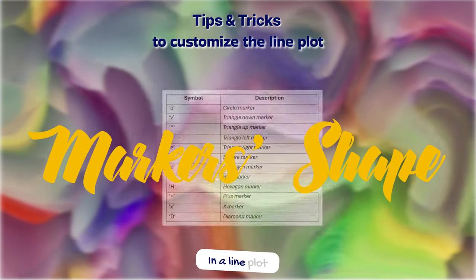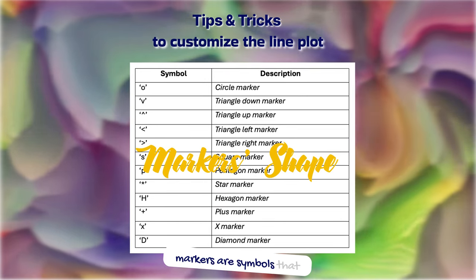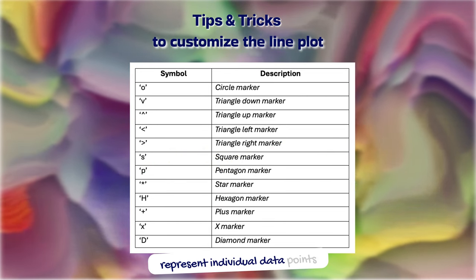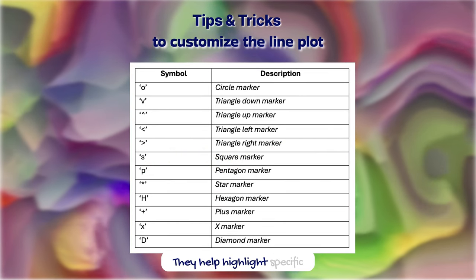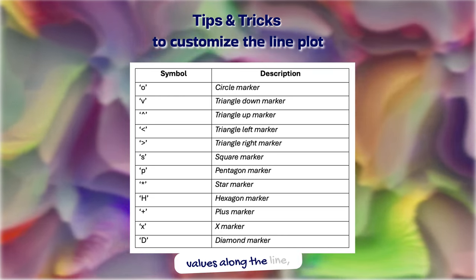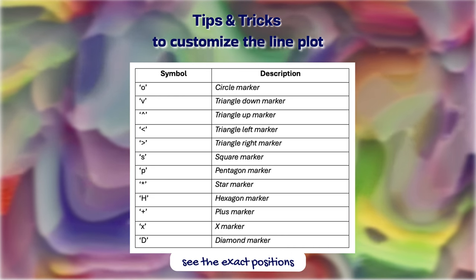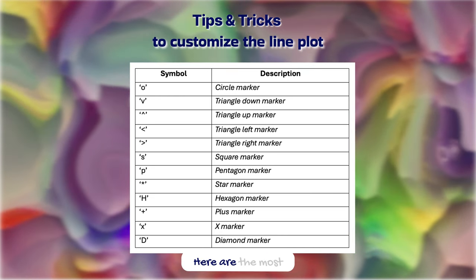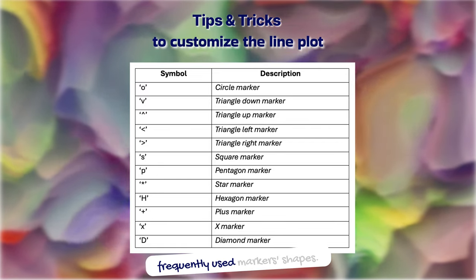In a line plot in Matplotlib, markers are symbols that represent individual data points on the plot. They help highlight specific values along the line, making it easier to see the exact positions of the data points. Here are the most frequently used marker shapes.